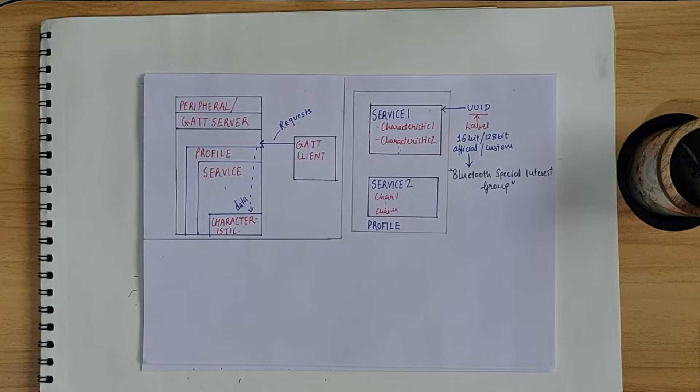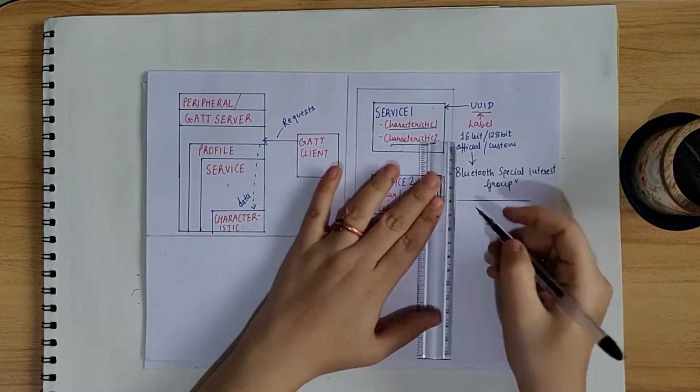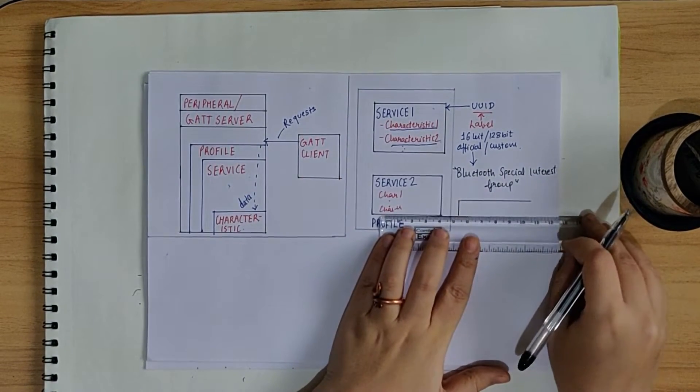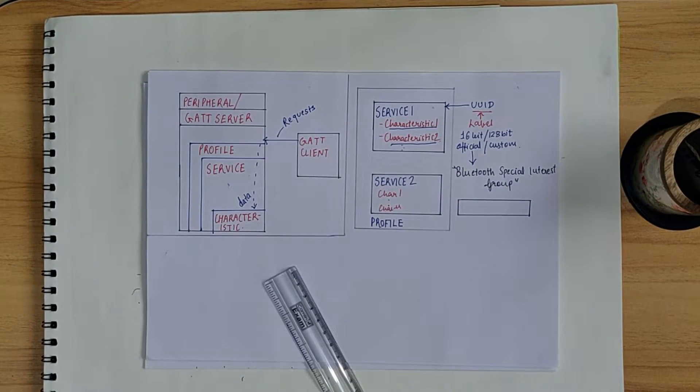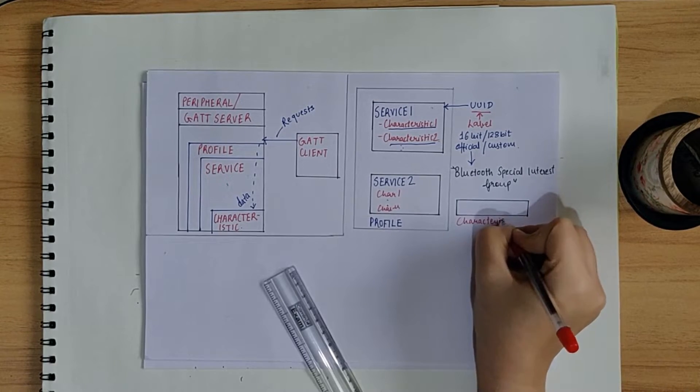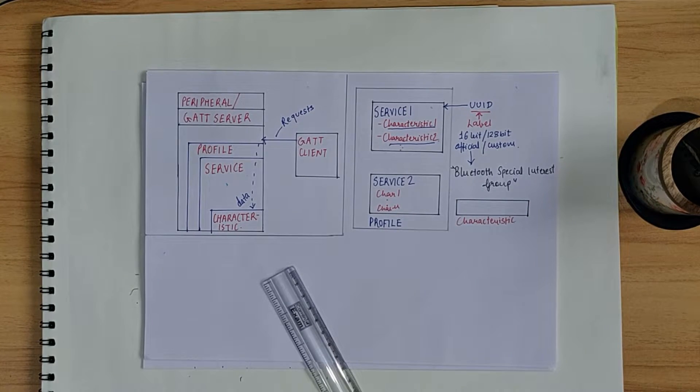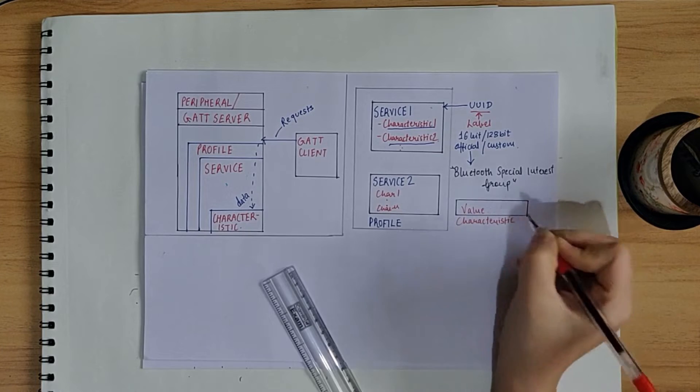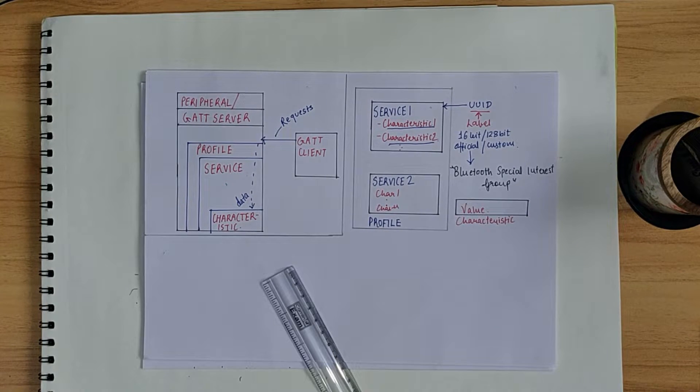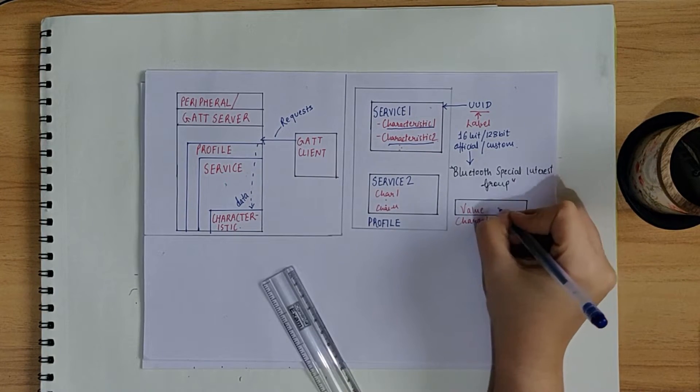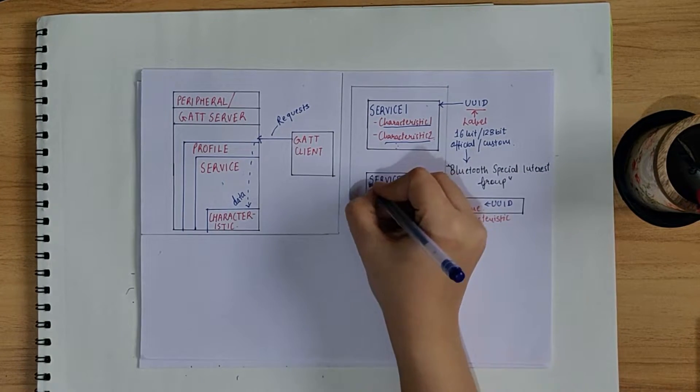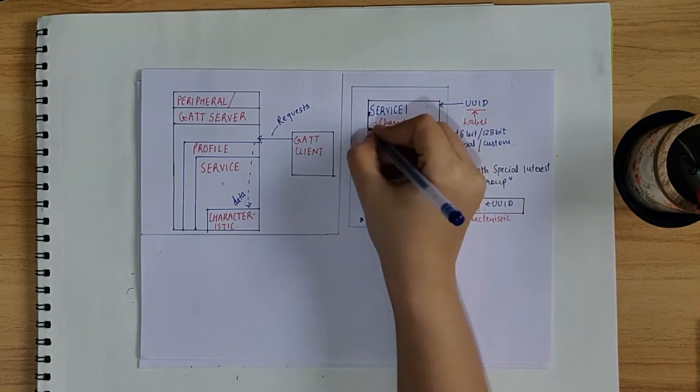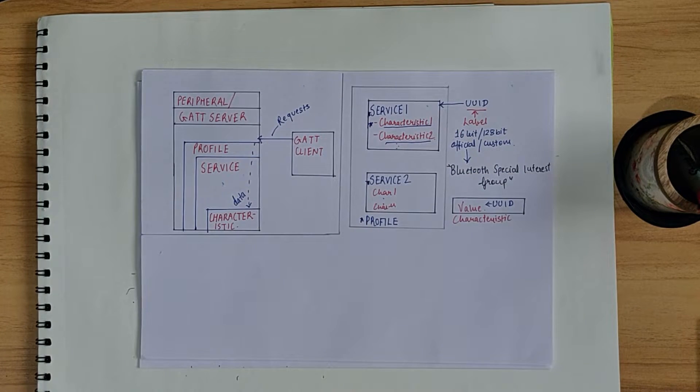So, that brings us to the last or the lowest level concept of GATT, which is characteristics. As I said, they are the lowest level concept in GATT transactions, which encapsulates a single data point or value. It can also hold an array of related data, such as XYZ values of a three-axis accelerometer. Similar to services, characteristics have a predefined 16-bit UUID or custom 128-bit UUID.